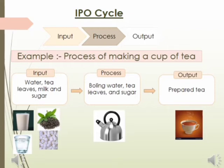Let us understand more about IPO cycle. For making a cup of tea, we need water, tea leaves, milk, and sugar which is considered as the input. After that we will boil water, add some tea leaves, sugar, and milk. This is known as the process of making a tea. After that, the output we get is a prepared tea.